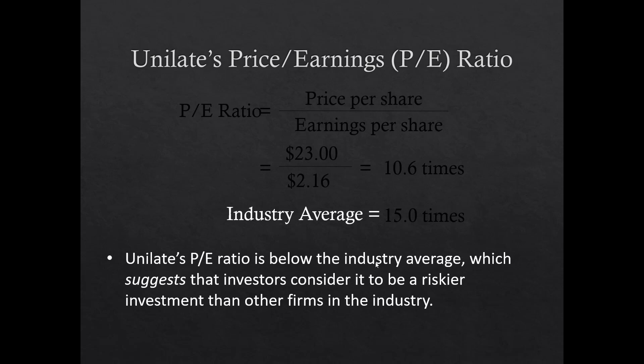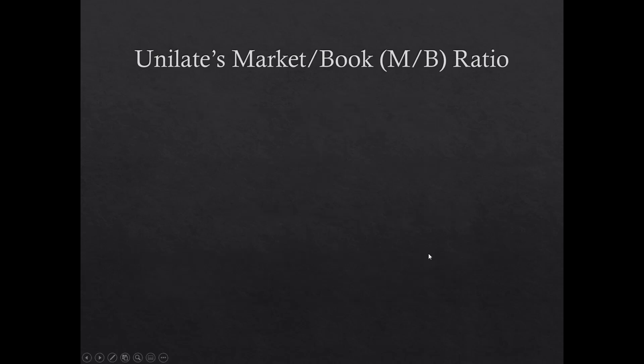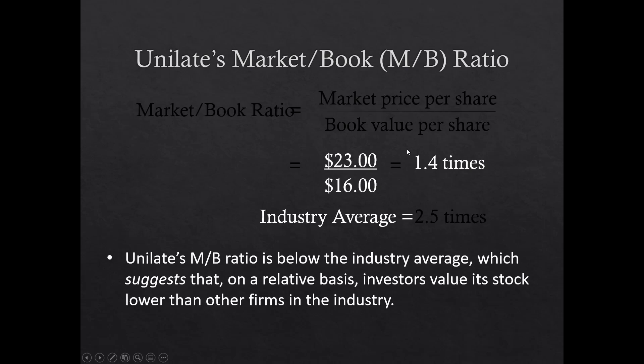When the P/E ratio is below the industry average, investors consider the stock riskier — they require a higher return to hold it, so they won't pay as much for it. Market-to-book ratio: market price per share / book price per share = $23 / $16 = 1.4 times; industry average is 2.5 times. Unilate's market-to-book ratio is well below industry average, meaning investors value this stock significantly lower relative to the book value of its assets compared to other firms.